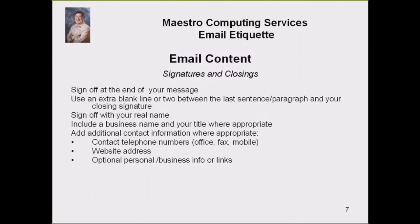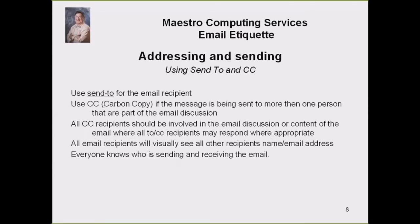When you close out your email, going back to normal correspondence of the old style, sign off at the end of your message. Use an extra line or two between the last sentence and your closing signature, and sign off with your real name. Include a business name if you're representing a business or organization such as APCUG, and your title. Add additional contact info such as your fax number, mobile number, or office number. Put down the website address and any other links that might help the reader find you or your information quickly.